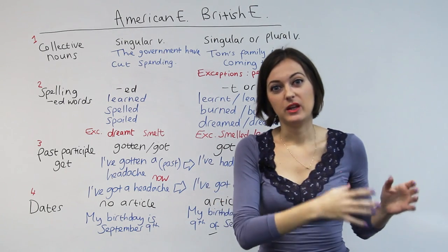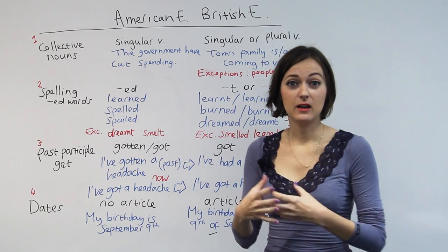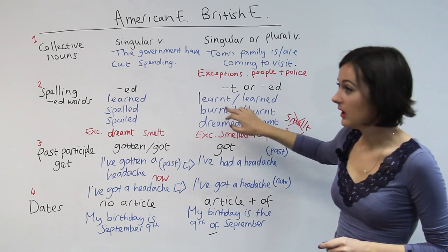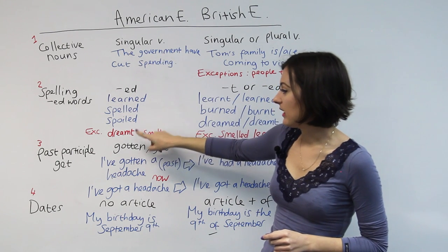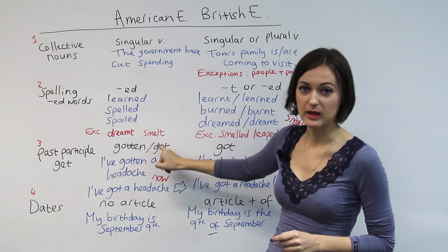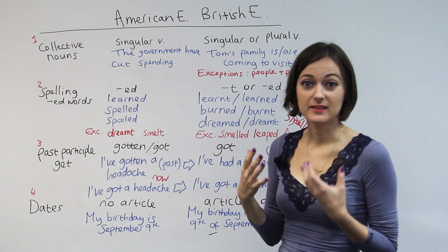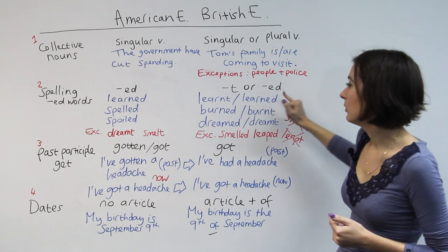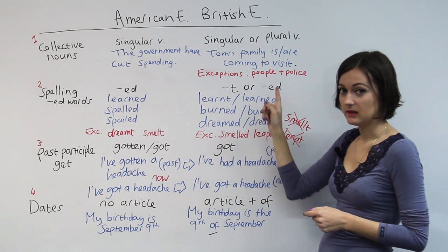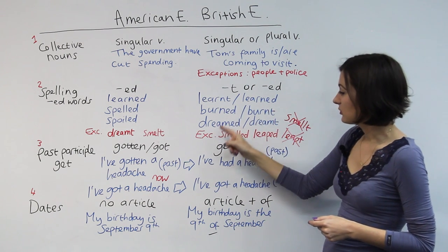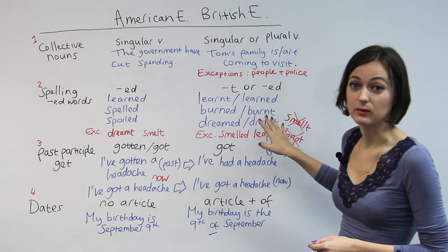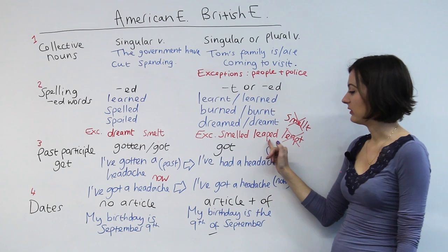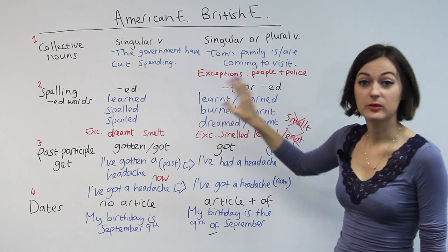That girl hadn't seen 'learned' spelt with a T before, which is okay in British English. So in American English, you have a couple of exceptions — you would spell 'dreamt' and 'smelt' with a T, probably because these words sound like they have T endings. Whereas in British English, we have an option: we can spell words with a T or -ed in many cases, like 'learned/learnt,' 'burned/burnt,' 'dreamed/dreamt.' They actually have different pronunciations as well. We have a couple of exceptions too — we don't say 'smelt' and we don't say 'lept'; we spell these with -ed. So those are our spelling differences.